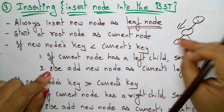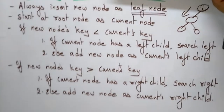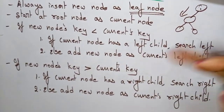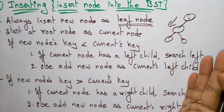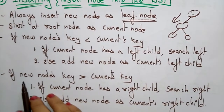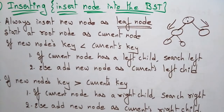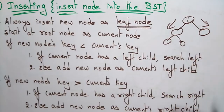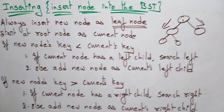If the element is already present, you just discard it, because no duplications are allowed in the binary search tree. If the new node's key is greater than the current node, come to the right subtree. If the current node has a right child, search right. Else, add the new node as the current right child.